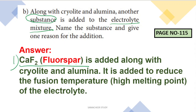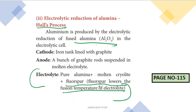We add fluorspar to the electrolyte. It reduces the fusion temperature of the electrolyte — it lowers the fusion temperature. So the reason for addition is: fluorspar lowers the fusion temperature of the electrolyte. This is the answer to the question, students.